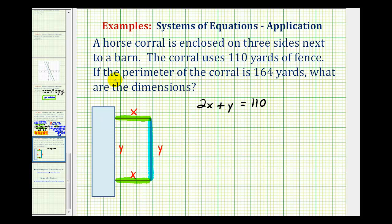And the next sentence tells us the perimeter of the corral is 164 yards. But the perimeter would be the distance all the way around the outside of the corral, so it would also include this length here. Therefore, the second equation would be 2x plus 2y equals 164.